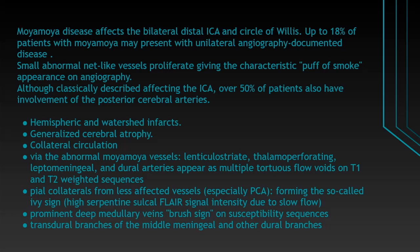Although classically described affecting the ICA, over 50 percent of patients also have involvement of the posterior cerebral arteries. Imaging features include hemispheric and watershed infarcts, generalized cerebral atrophy, and collateral circulation via abnormal Moya Moya vessels — the lenticulostriate, thalamoperforating, leptomeningeal, and dural arteries — appearing as multiple tortuous flow voids on T1 and T2 weighted sequences. Pial collaterals from less affected vessels, especially the posterior cerebral artery, form the so-called ivy sign, seen as high serpentine sulcal FLAIR hyperintensity due to slow flow. Prominent deep medullary veins form the so-called brush sign on SWI sequences, along with transdural branches of the middle meningeal and other dural branches.